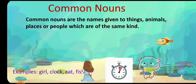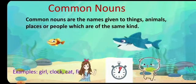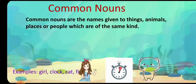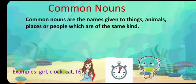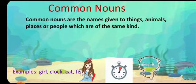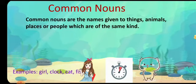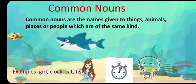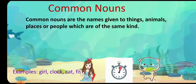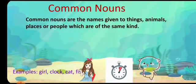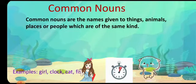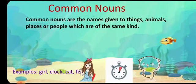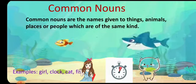Common nouns are the names given to things, animals, places, or people which are of the same kind. For example: girl, clock, cat, fish — all these are used for the same kind.